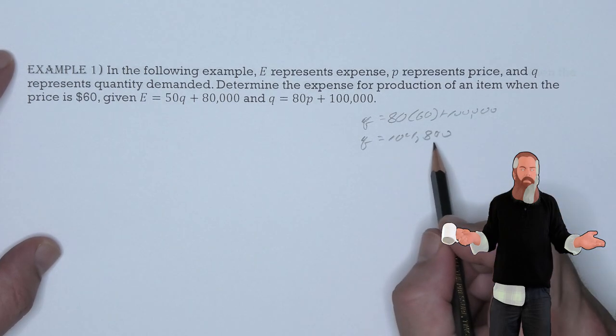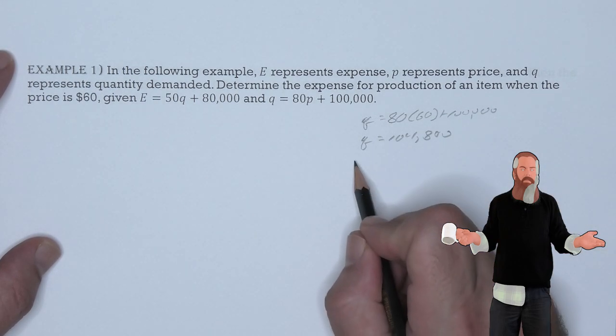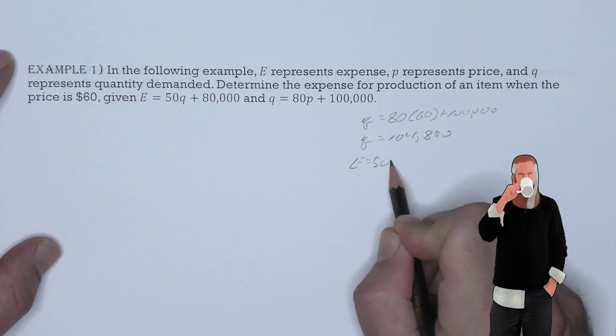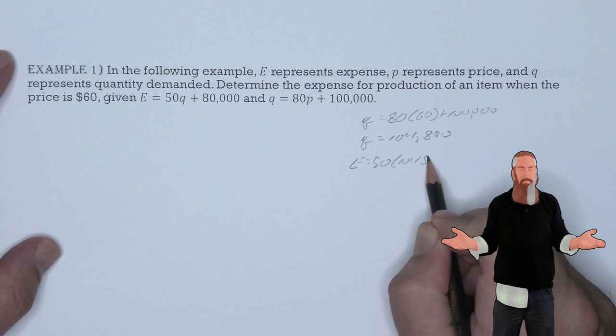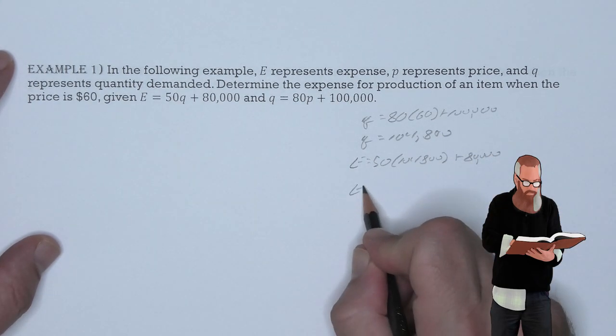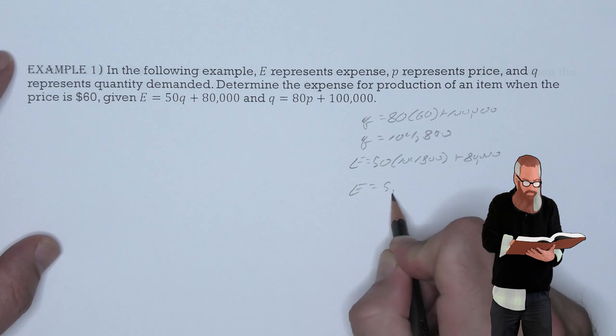Knowing that Q is 104,800, we use our E equation substituting that value in so that 50 times 104,800 plus 80,000. This gives us that E is 5,320,000.